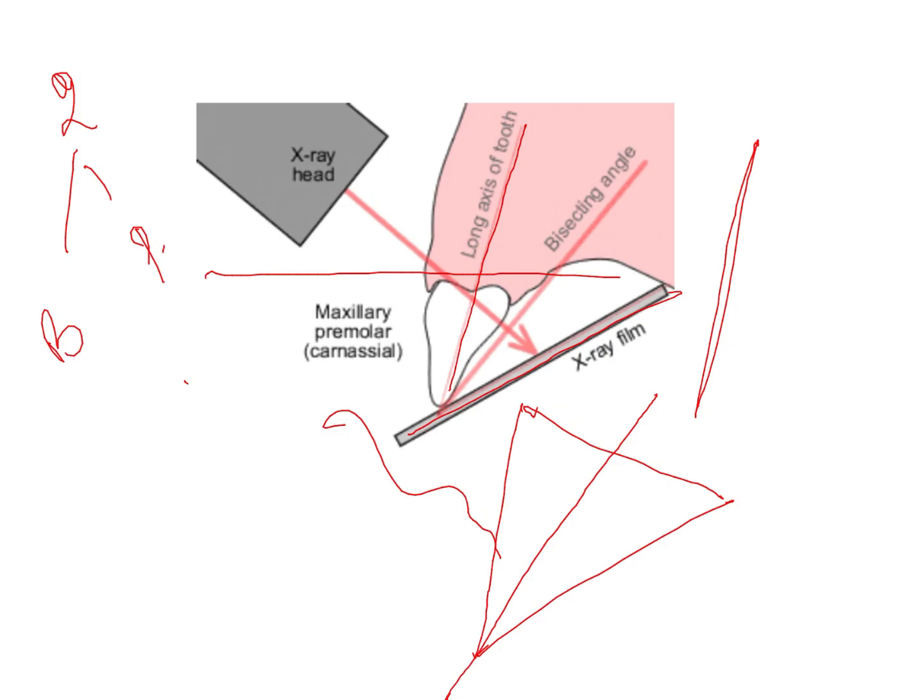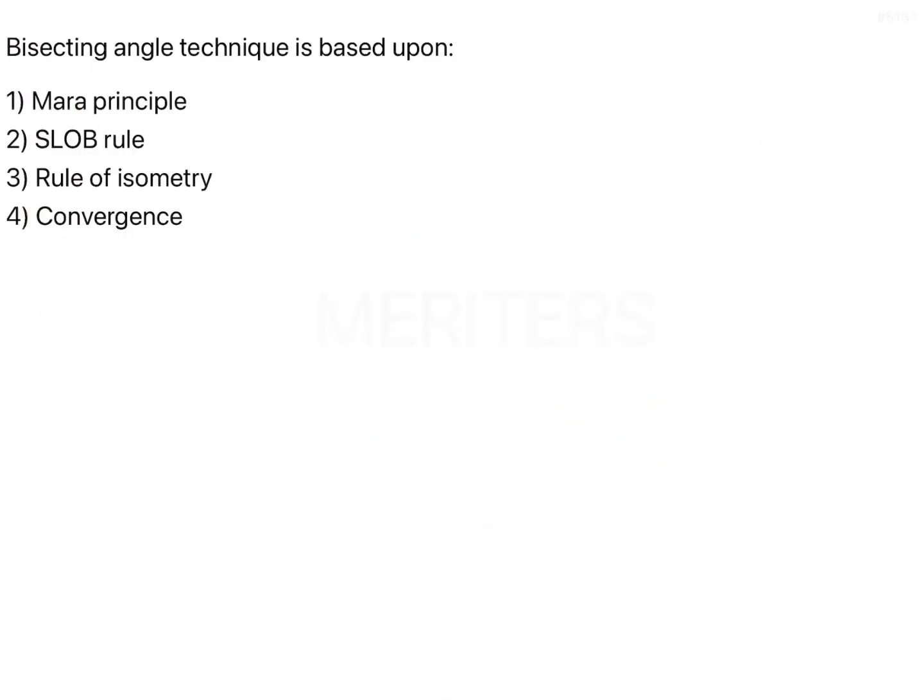To recap: you have the long axis of the tooth, the film, and an imaginary line dividing the triangle into two equal, symmetrical triangles. This is the rule of isometry on which the bisecting angle technique is based.